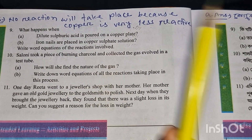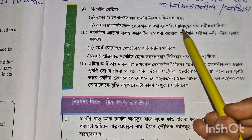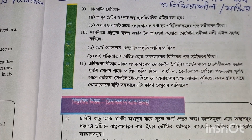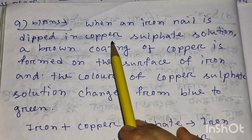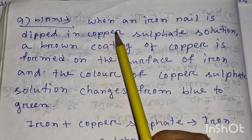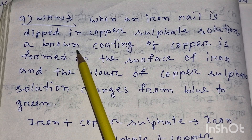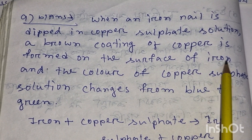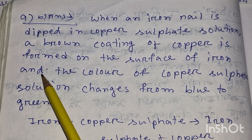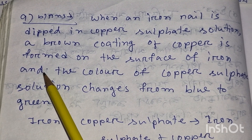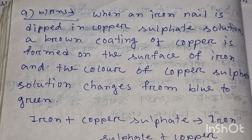Iron nails are placed in copper sulfate solution. When an iron nail is dipped in copper sulfate solution, a brown coating of copper is formed on the surface of the iron. The color of the copper sulfate solution changes from blue to light green.